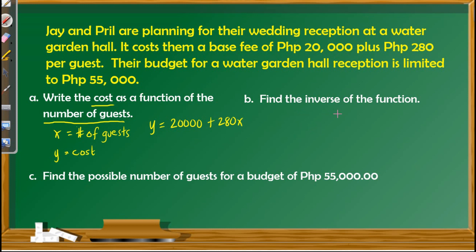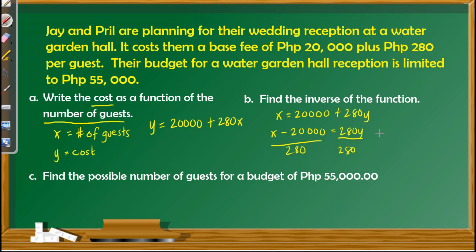For letter B, find the inverse of this function. First, interchange X and Y: X = 20,000 + 280Y. Next, solve for Y: subtract 20,000 from both sides to get X minus 20,000 = 280Y, then divide both sides by 280. So we now have Y = (X − 20,000) / 280.